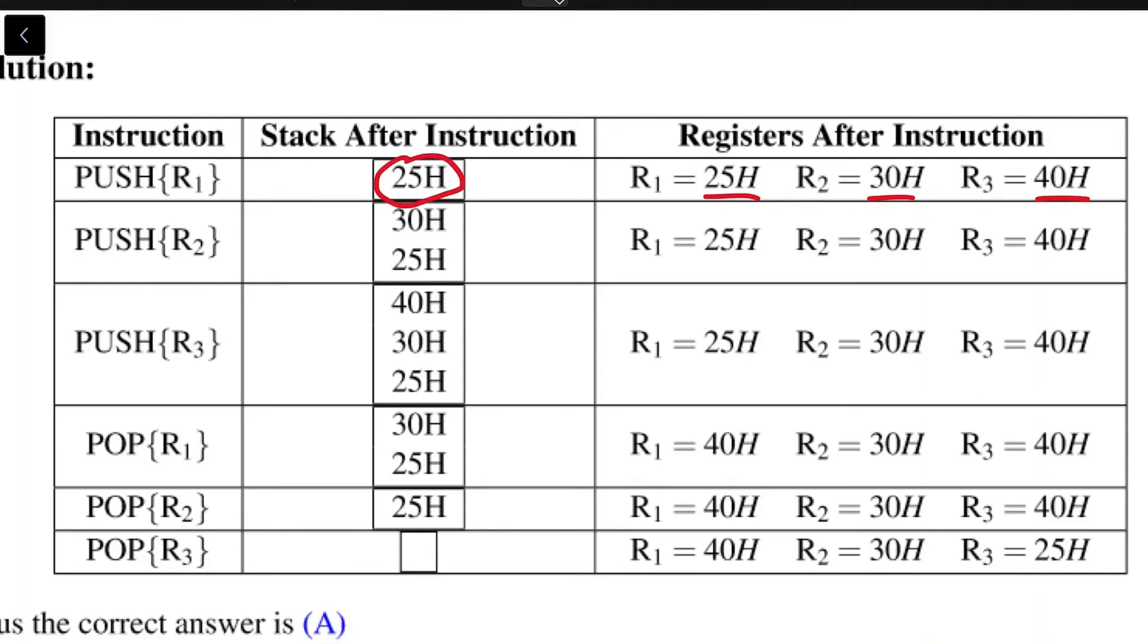If you do push r1, the stack only has 25h on it. But now if you do push r2, 25h goes below and then you get 30h on the first index. And finally with push r3, you get 40, 30, and 25. The registers till now have not changed their values.